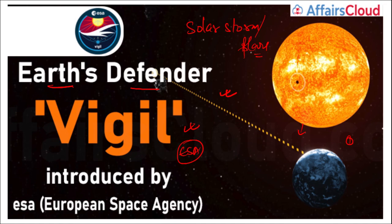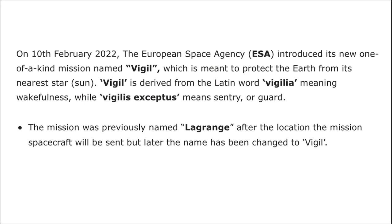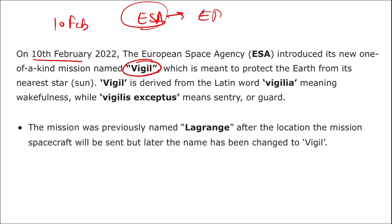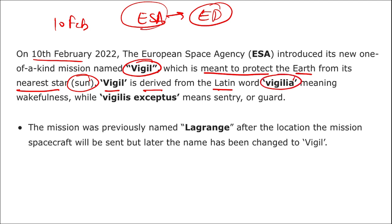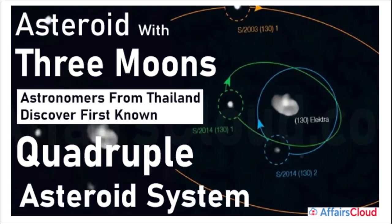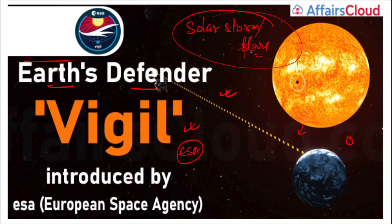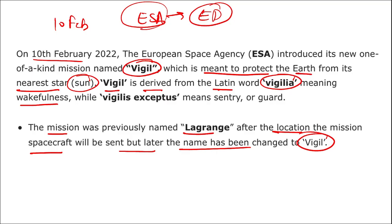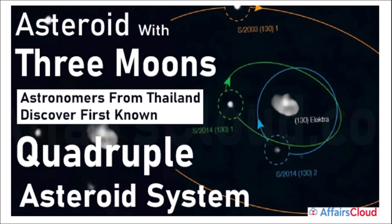The name 'Vigil' is derived from the Latin word meaning 'wakefulness.' The mission was previously named Lagrange, after the Lagrange point where the spacecraft will be positioned, but was later renamed Vigil. It is designed to protect Earth from solar storms and flares originating from our nearest star, the Sun.